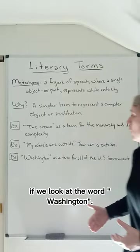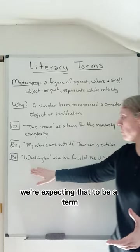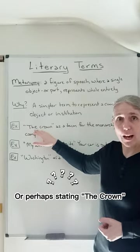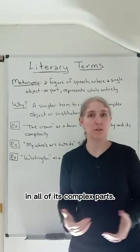Say for example if we look at the word Washington, when we say Washington, we're expecting that to be a term for all of the US government or perhaps stating the crown as being a term for the monarchy in all of its complex parts.